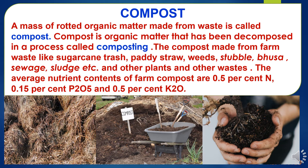What is compost? A mass of rotted organic matter made from waste is called compost. Compost is organic matter that has been decomposed in a process called composting. The compost is made from farm wastes like sugarcane trash, paddy straw, wheat, vegetable waste, bhusa, sewage sludge, and other plant and farm wastes. The average nutrient content of farm composts is 0.5% nitrogen, 0.15% phosphorus, and 0.15% potassium.